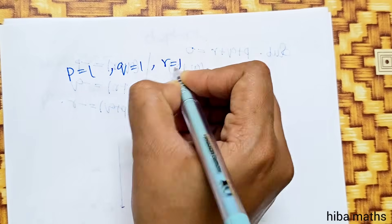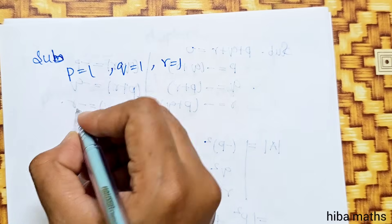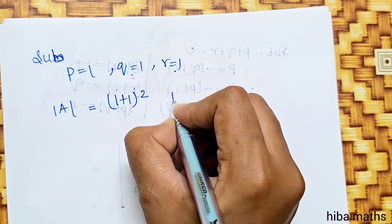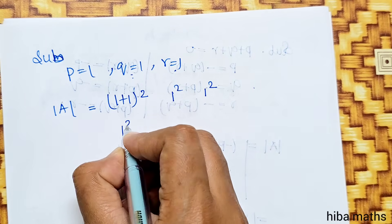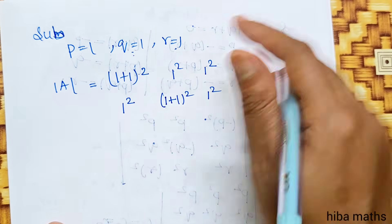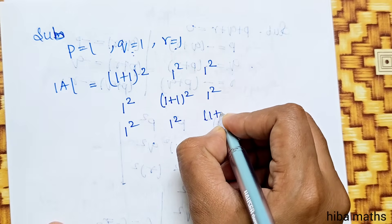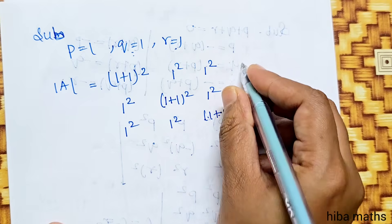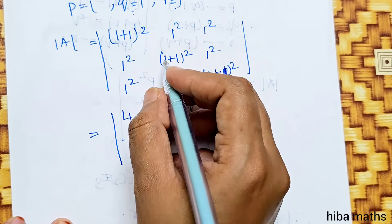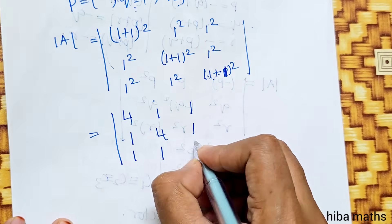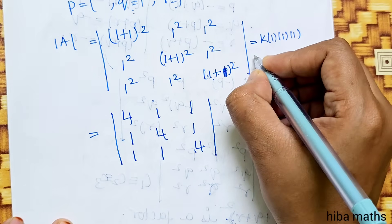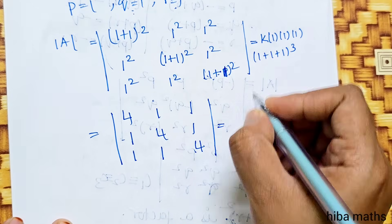To find K, substitute P=1, Q=1, R=1. Then Q+R = 1+1 = 2, so (Q+R)² = 4; P² = 1. R+P = 1+1 = 2, (R+P)² = 4; Q² = 1. P+Q = 1+1 = 2, (P+Q)² = 4; R² = 1. We substitute these values: K into 1·1·1·(1+1+1)³. This equals K·1·27 = 27K.